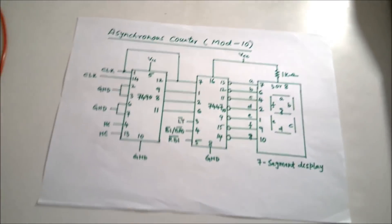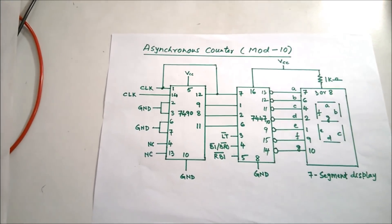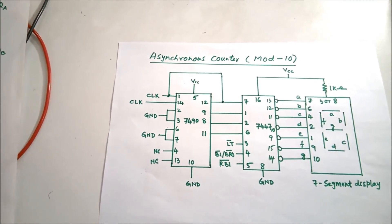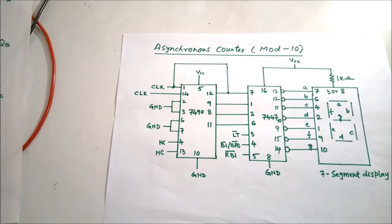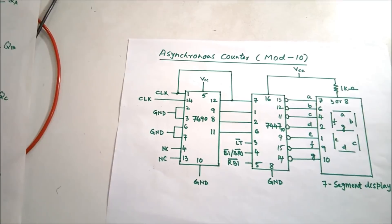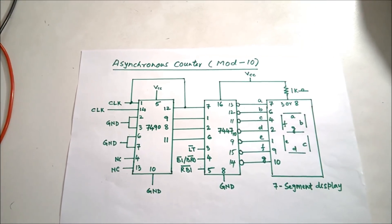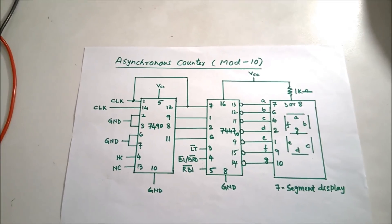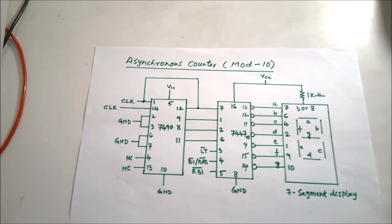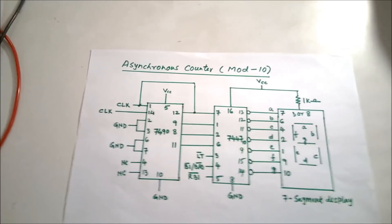With each clock pulse, the counter increments by 1, counting up to 9, then rolling back to 0. This digital output is fed to the 7447, which drives the appropriate LEDs in the 7-segment display. That is the complete concept of this experiment.